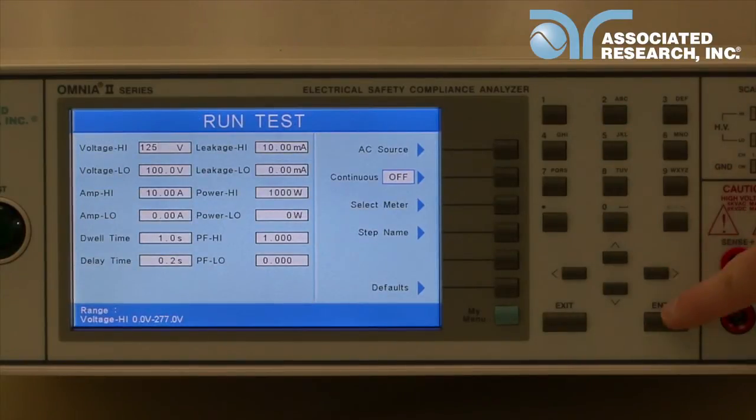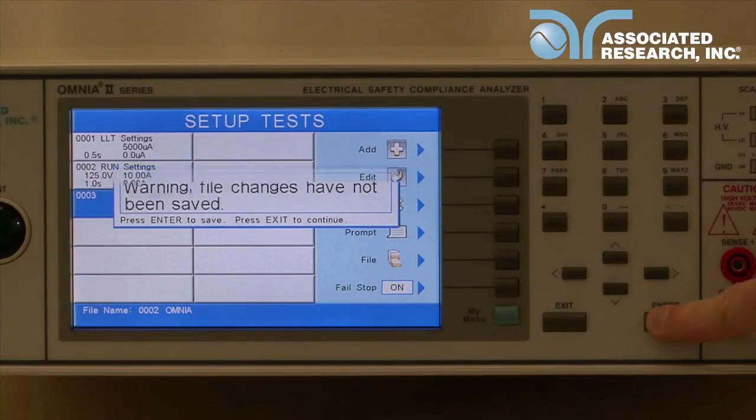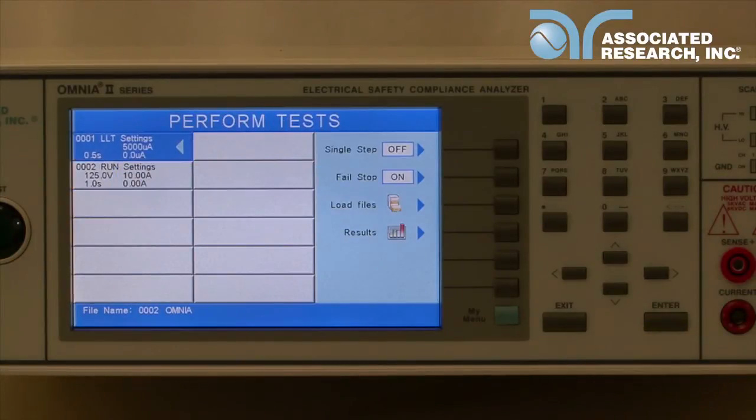Set up your parameters and press the exit key when finished. You will now see your two tests in the setup tests window. Press the enter key two times to save your changes. This will take you to the perform tests window, from here you can run the test sequence.